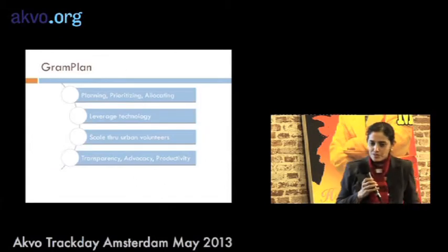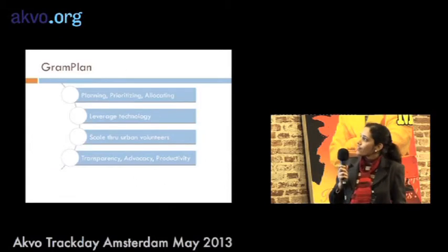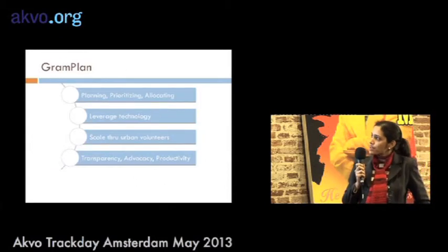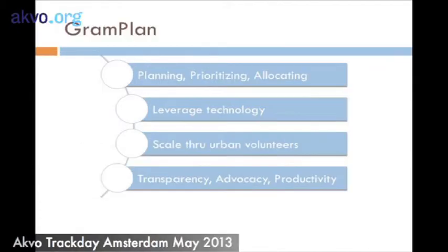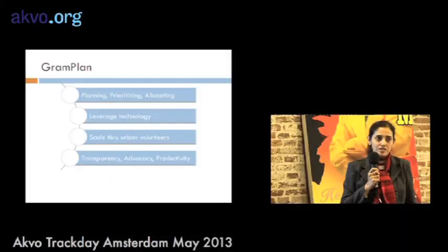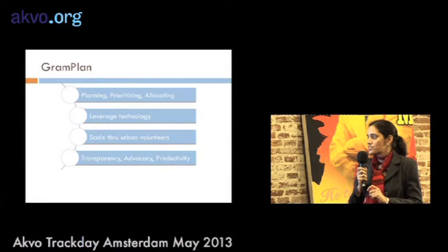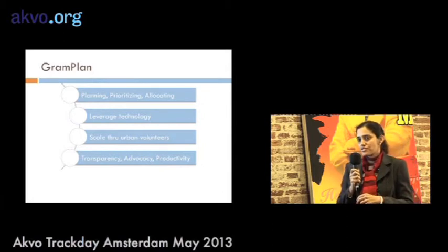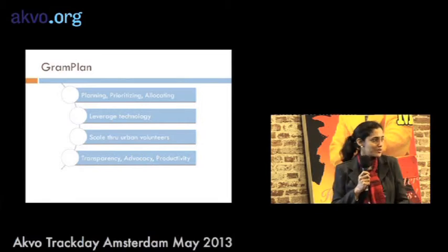In closing, Gram Plan is about helping rural governments do planning and prioritization better. Today they lack the tools, and one key gap is proper, relevant, usable data. The idea is to leverage technology and scale it through urban volunteers, ultimately addressing core issues of transparency and productivity.